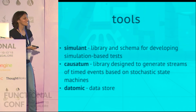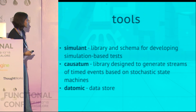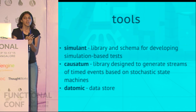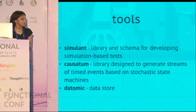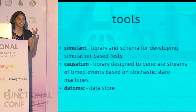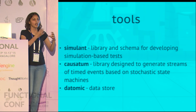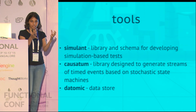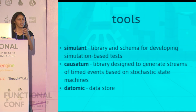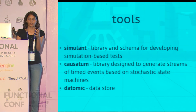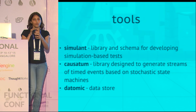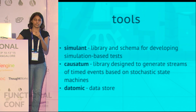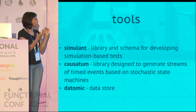The tools we used for simulation testing are Simulant, Causatum, and Datomic. Simulant is a library and schema for developing simulation-based tests written and maintained by Cognitect. It gives you abstractions like models, tests, and sims. A model is how you define the different activities that happen in your system. Based on the model, you define your test cases — based on what activities can happen in your system, you define all your test cases, which are generated rather than individually specified. A simulation is an instance of that test executed against your system. Causatum is the library we use to generate streams of time-based events. Datomic is the data store of choice because it works well with Simulant.